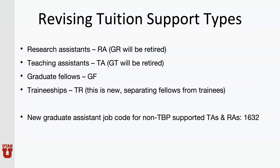The RA and TA job codes are exclusive to the tuition benefit program. Should you have a student fulfilling research or teaching assistantship duties but not participating in tuition benefit, you can now use the 1632 job code.